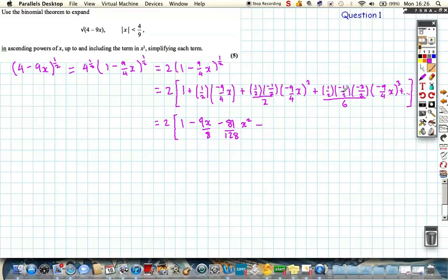You get minus 81 over 128x squared minus, sorting all this out again, it's going to be another minus because we're going to get a positive from these two negatives, but a negative cubed is also going to be a negative, so it's a negative overall. Again, you can use your calculator: 729 over 1024x cubed, plus the other terms which we're not interested in.